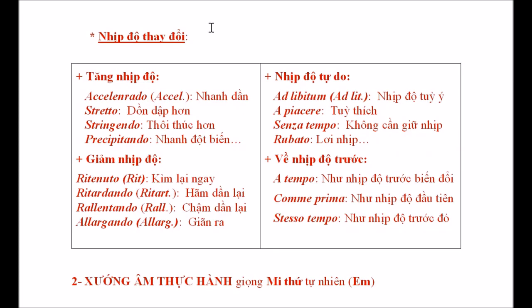Vấn đề thứ hai là nhịp độ thay đổi - khi tác phẩm hoặc từng đoạn từng chương tăng nhịp độ, giảm nhịp độ, hoặc nhịp độ tự do, hoặc cần phải quay trở về tốc độ như phần trước biến đổi. Những ký hiệu này chúng ta có thể tham khảo ở đây cũng như ở nhiều giáo trình khác.